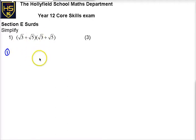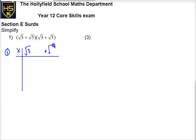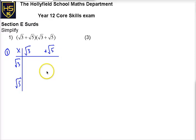So this works just like a double set of brackets algebraically. If you need the help, just like a double set of brackets you can do all sorts of things. So here we've got root 3 plus root 5, and here we've got root 3 and root 5. So we're going to get four possible answers here and then we're going to combine.